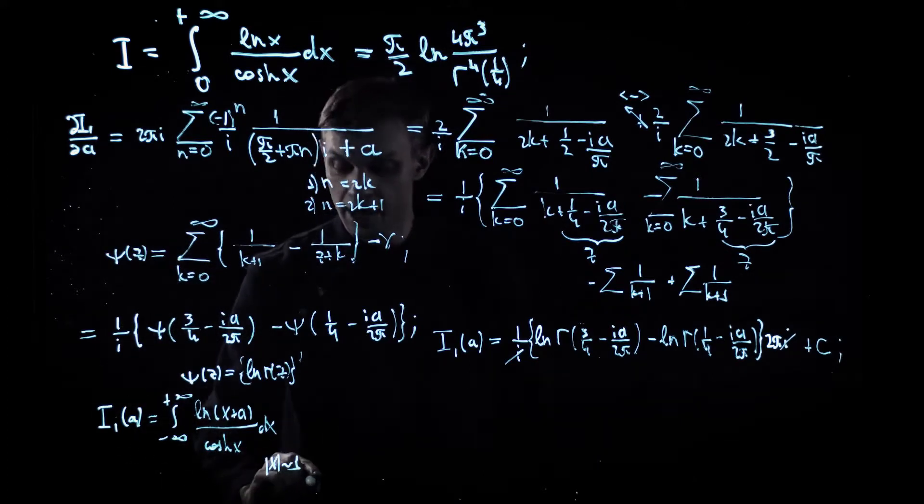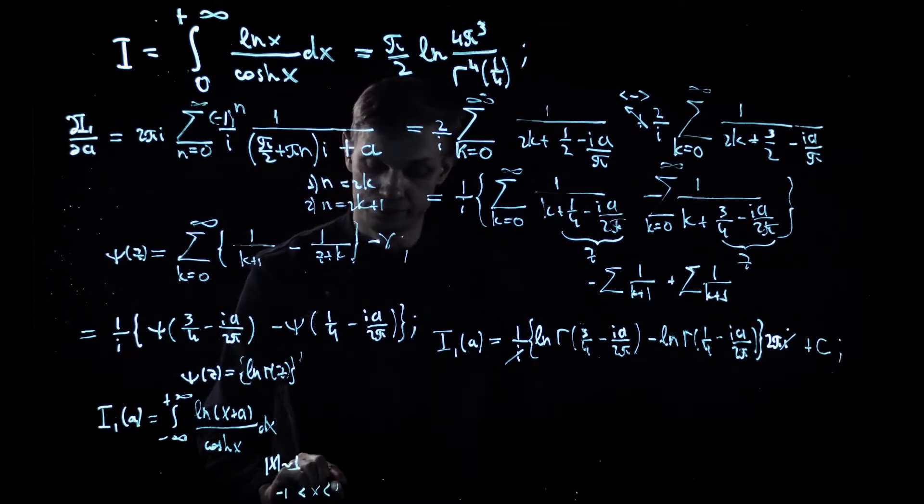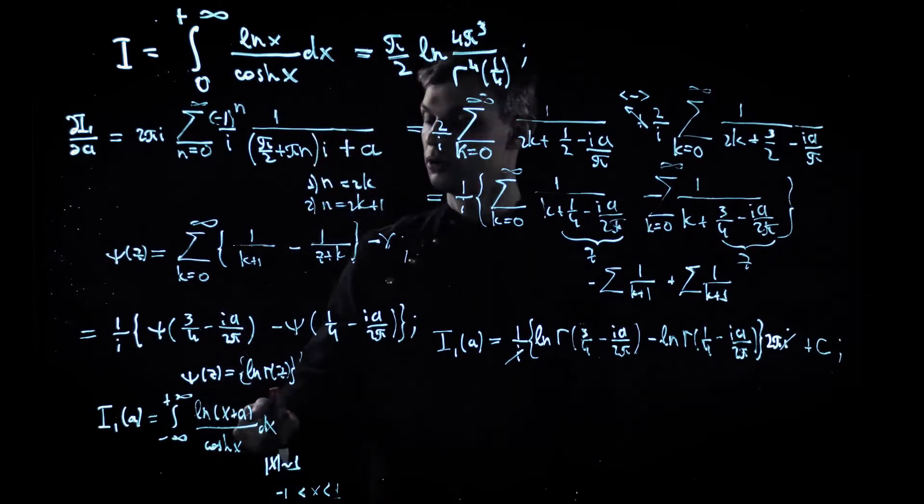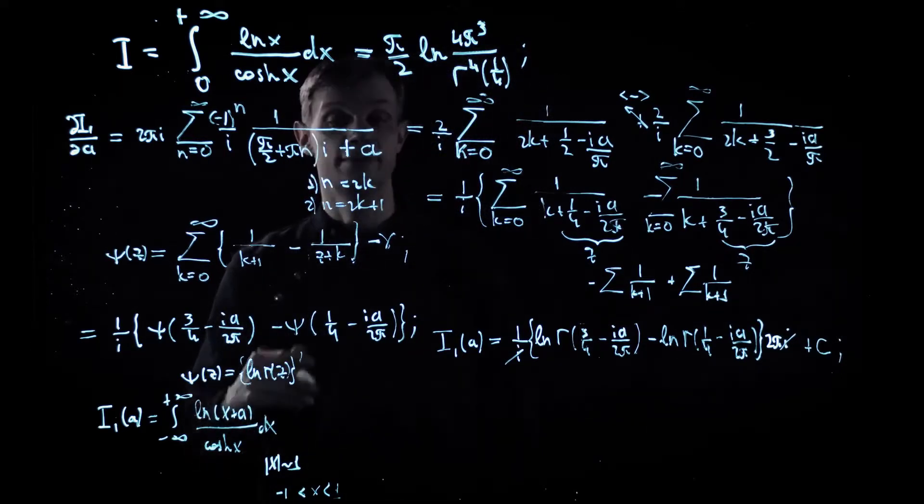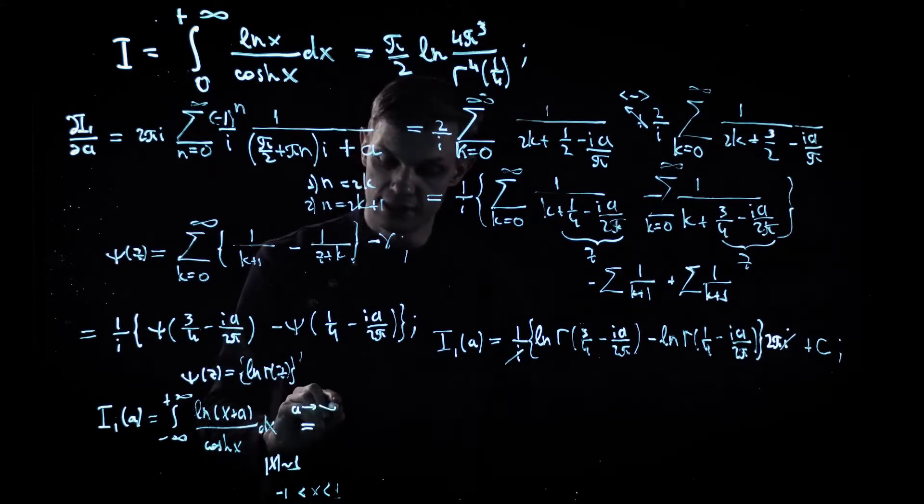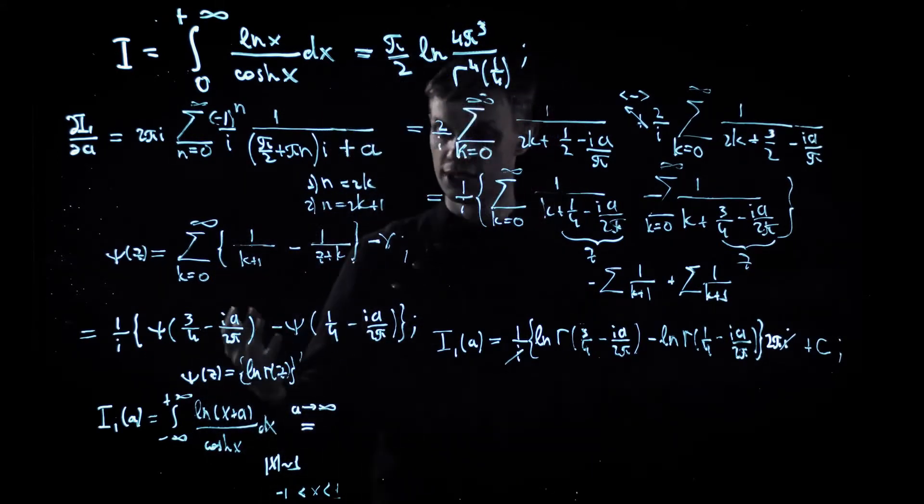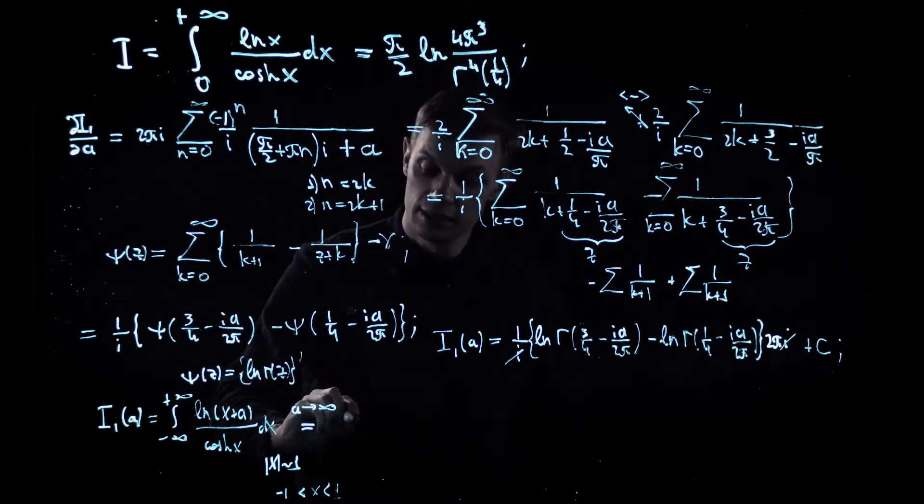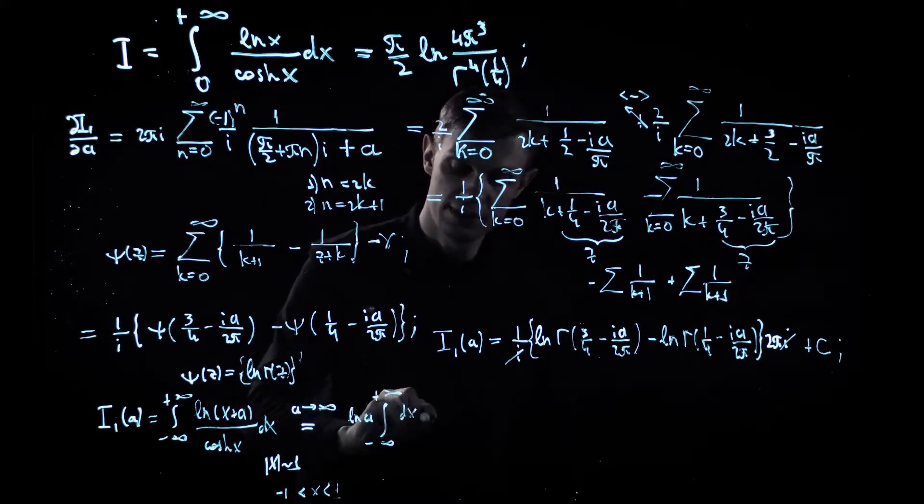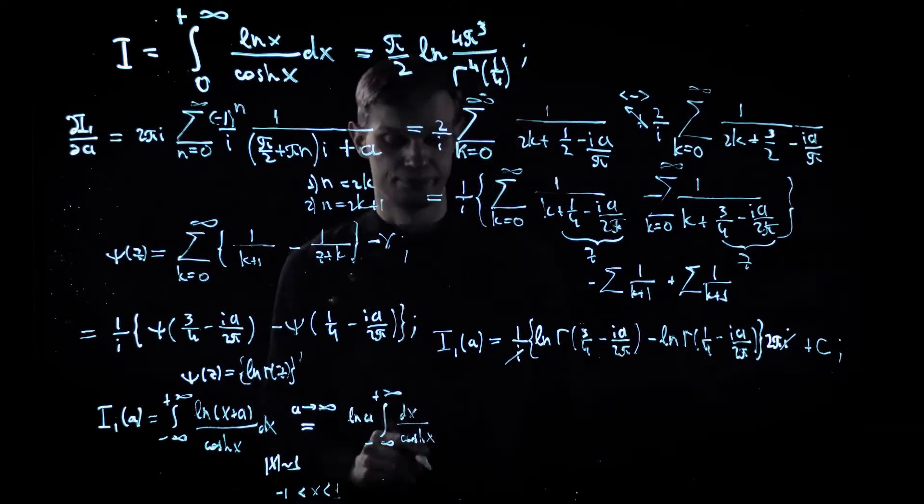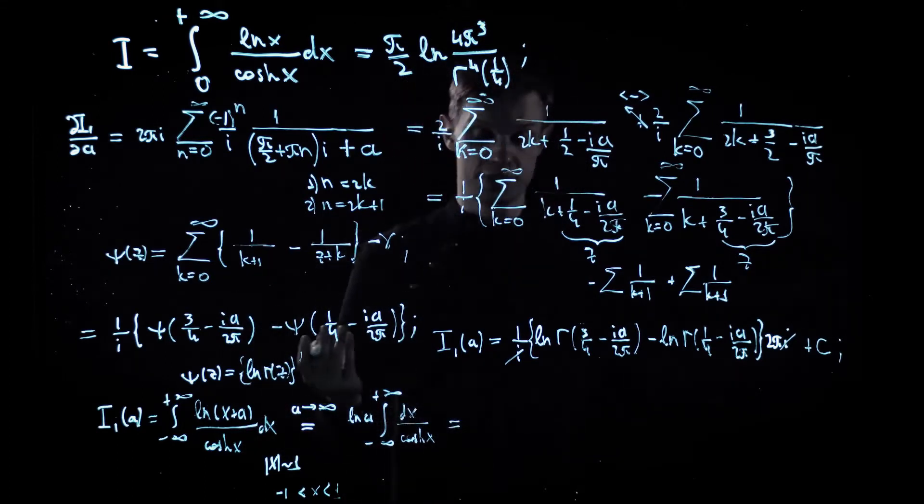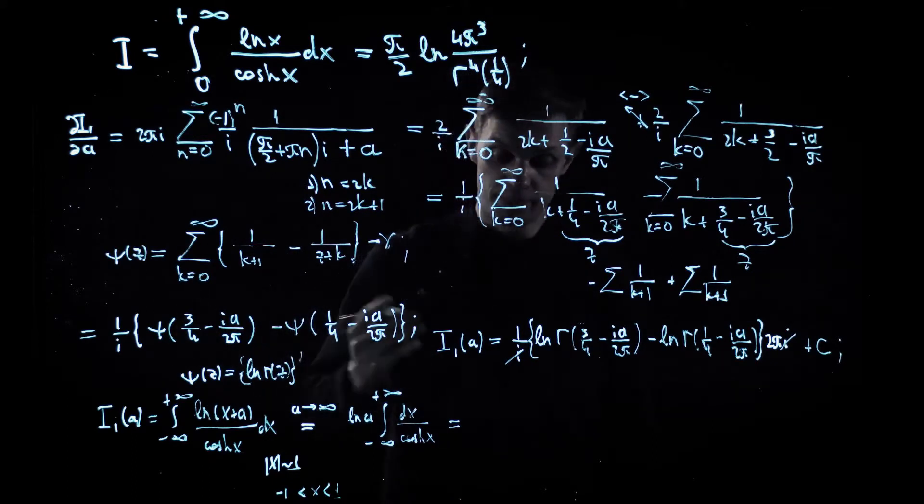So if a tends to plus infinity and important x are of the order of one, we can discard this x in the first approximation when taking the integral. So if a tends to infinity, then the first expression in our asymptotic expansion would look like logarithm of a times the integral over the simple cosine hyperbolic function. And we encountered this integral before and it's very easy to compute; the answer is pi by two. So here's our expression for the integral for large a.